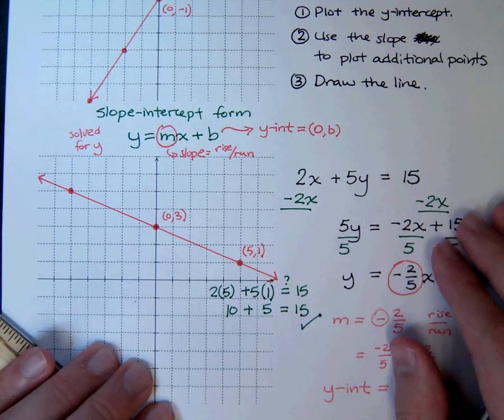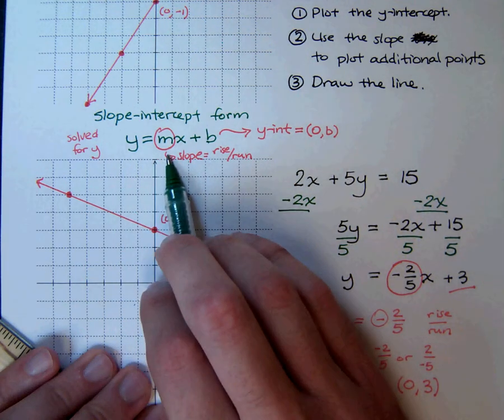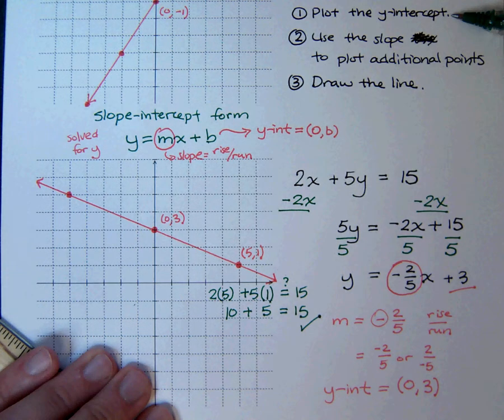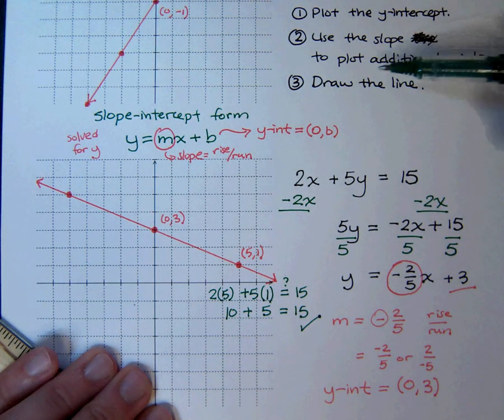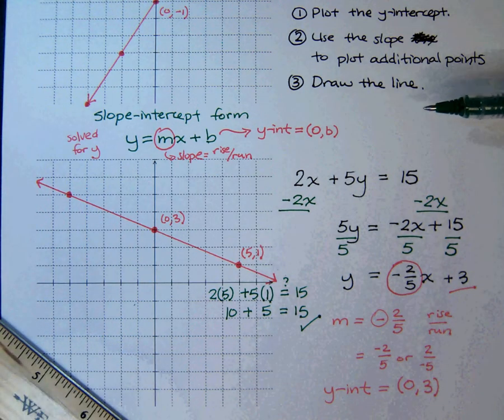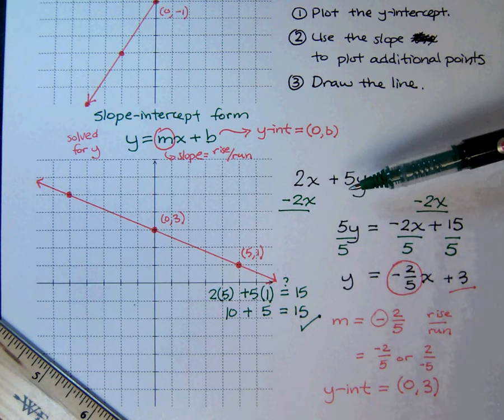So, to find the slope and the y-intercept, solve for y. Then, once you have the y-intercept, you plot that, use the slope to find additional points, and then you draw the line. And again, it's always a good idea to check the points that you have back into the original equation to make sure that does work out correctly.